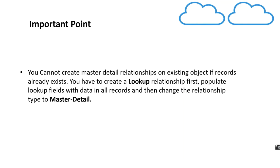One important point: you cannot create a master detail relationship on an existing object if records for that object already exist, because the field is mandatory and existing records won't have values for it. What you need to do is first create a lookup relationship between the two objects, populate the lookup fields with data in all existing child records, and then change the relationship type to master detail. That's how you can create a master detail relationship when child records already exist. That's it for this video — let me know in the comments if you have any doubts and don't forget to subscribe. Thank you.